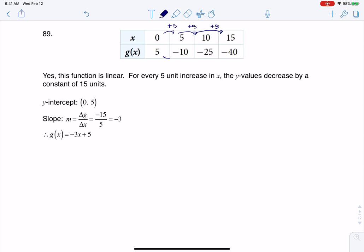And then if we look at our y's, what is happening to our y's? Well, to get from 5 to negative 10, I would have lost 15. To get from negative 10 to negative 25, I would have lost 15. And similarly, from negative 25 to negative 40.